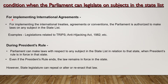The next condition is for implementing international agreements. For implementing international treaties, agreements, or conventions, the Parliament is authorized to make laws on any subject in the State List. Then, during President's Rule, Parliament can make laws with respect to any subject in the State List in relation to that state when President's Rule is in force in that state. Even if President's Rule ends, the law remains in force in the state. However, the state legislature can repeal, alter, or re-enact that law.